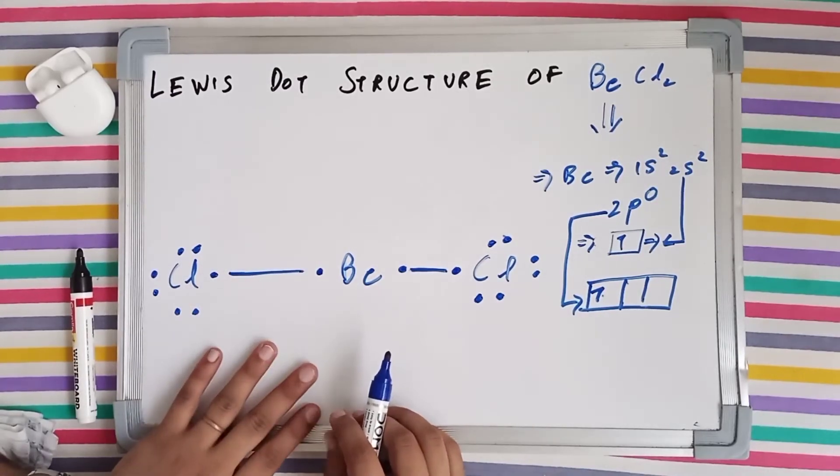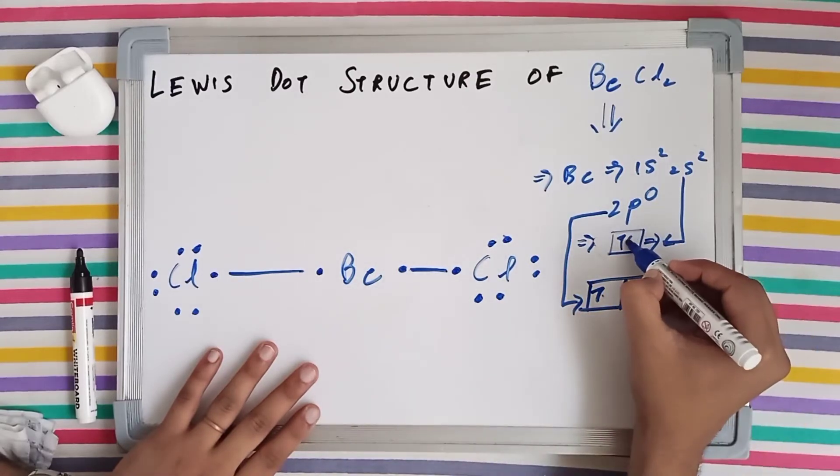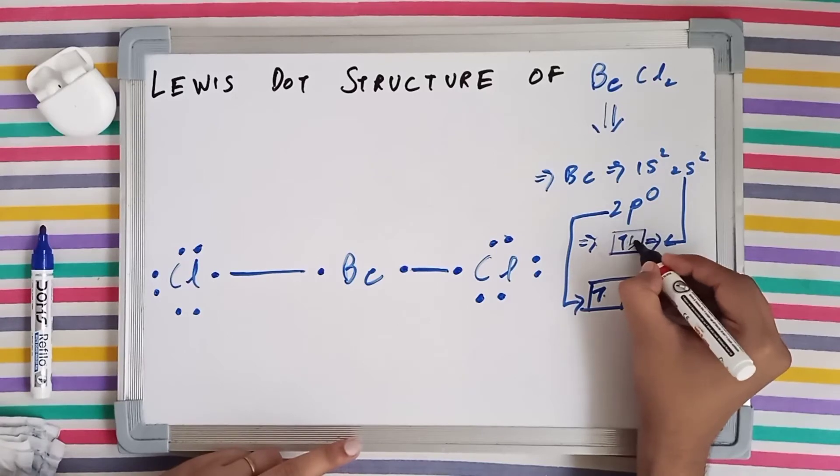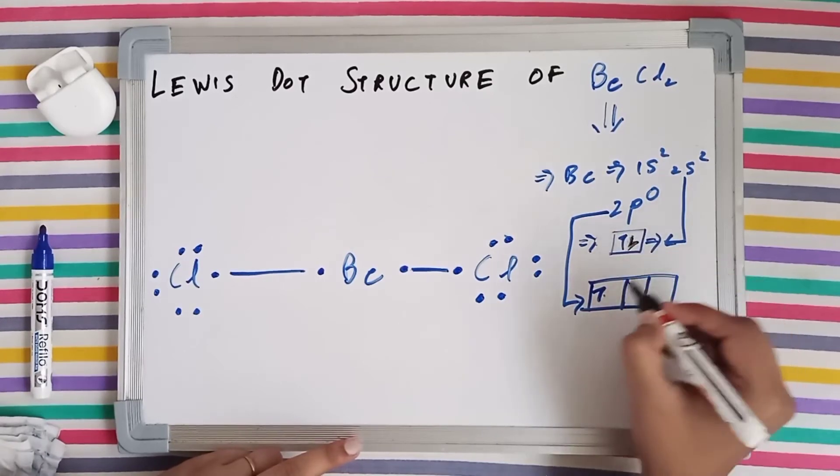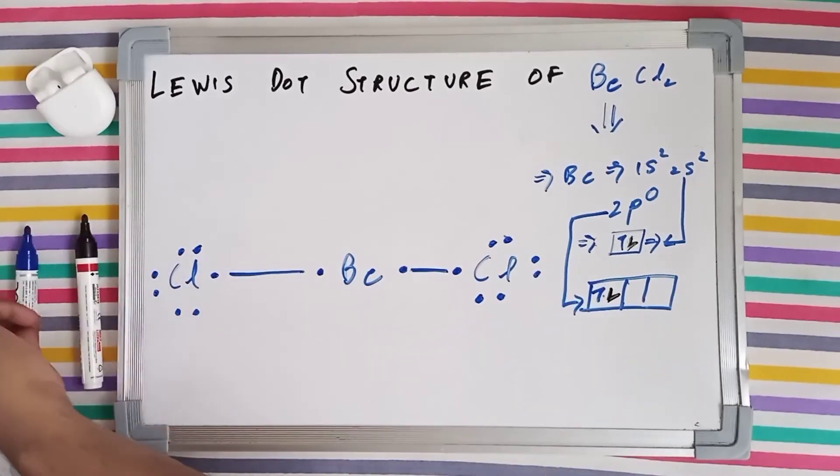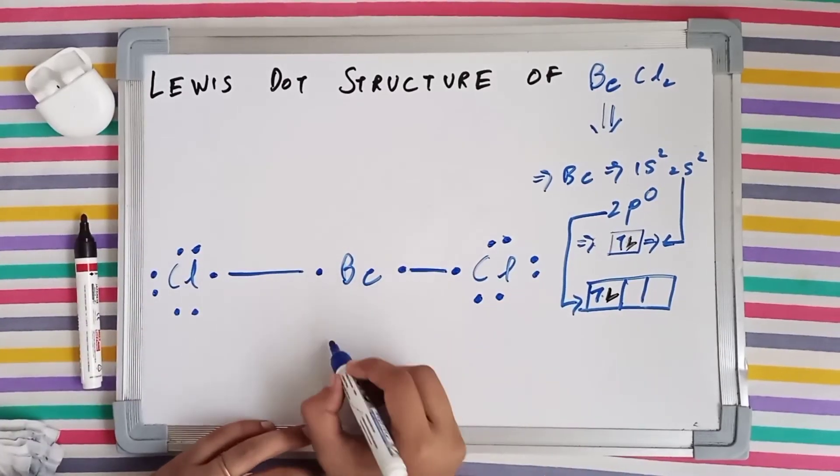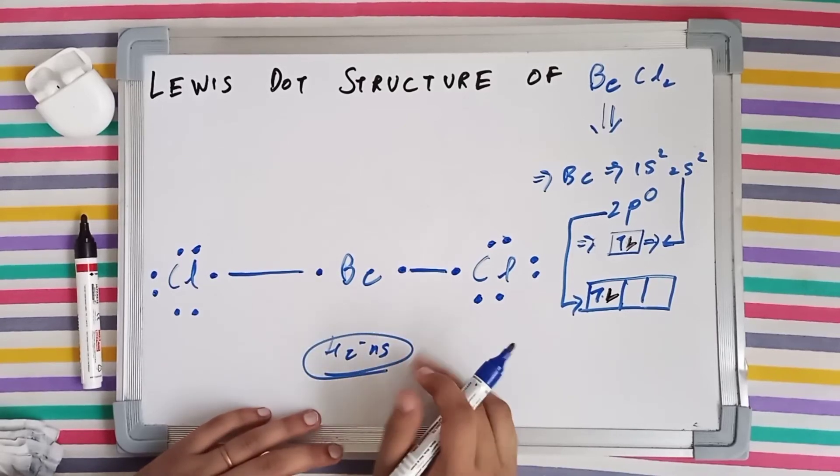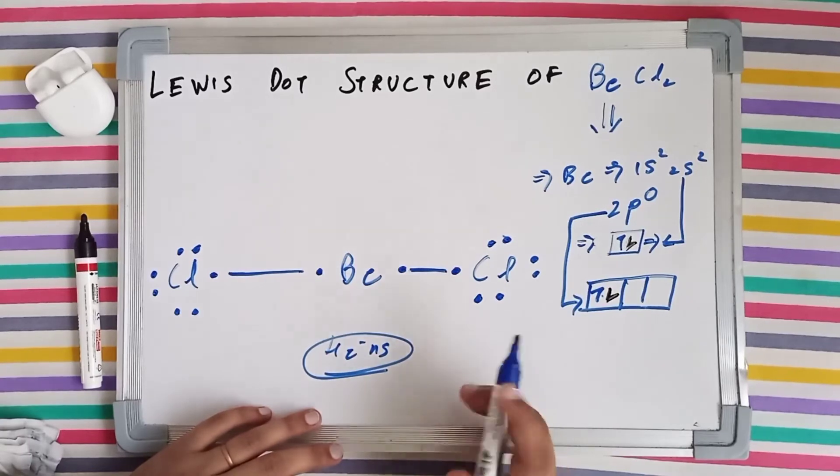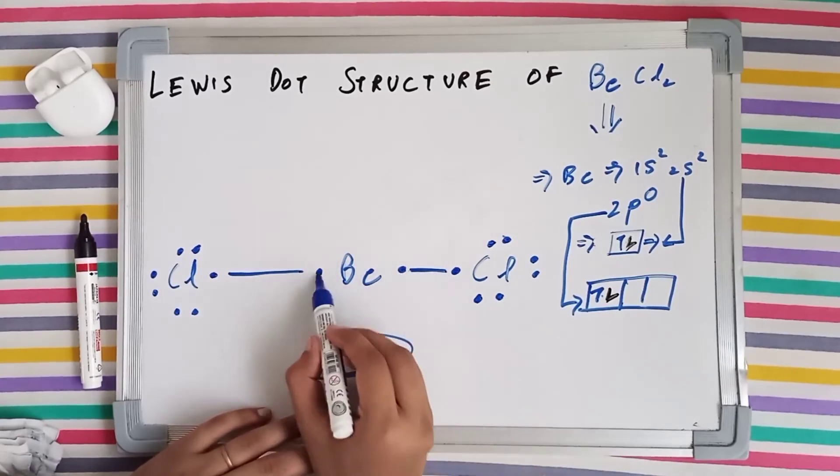Now beryllium now has this electron from chlorine and this electron from chlorine. So now it has got 4 electrons, 4 valence electrons in its valence shell after bond formation. I'm talking about post formation of the bond. So 1, 2, 3, 4.